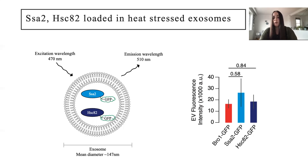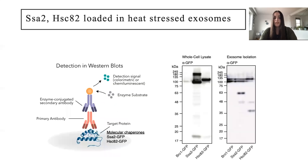Here, BROW1 is a marker for yeast exosomes. Then I used a technique for protein detection called western blotting. Proteins are separated based on size, then probed using antibodies. The black bands seen in the whole cell and exosome fractions confirm that molecular chaperones are present.